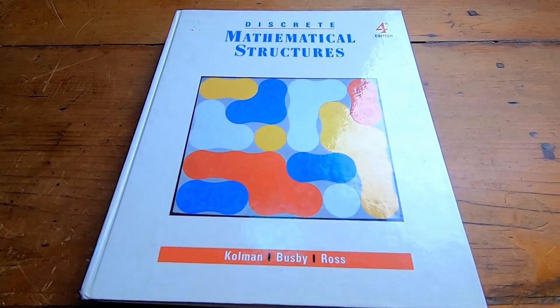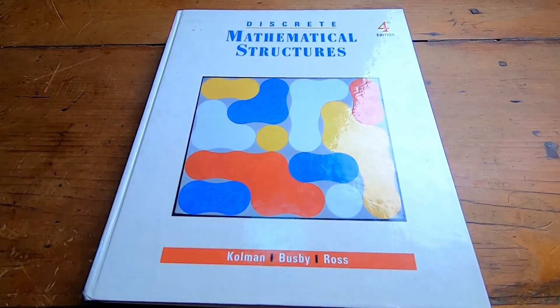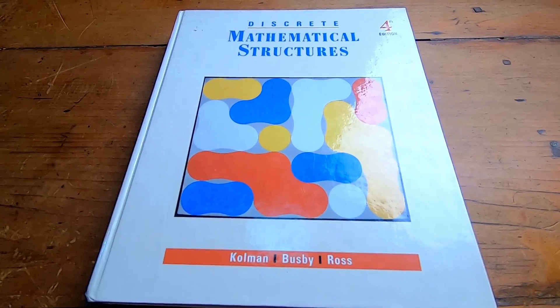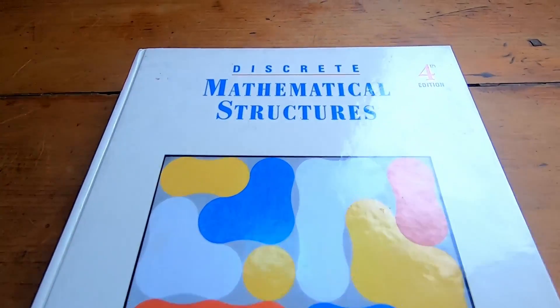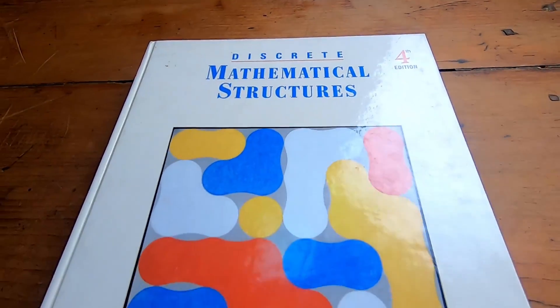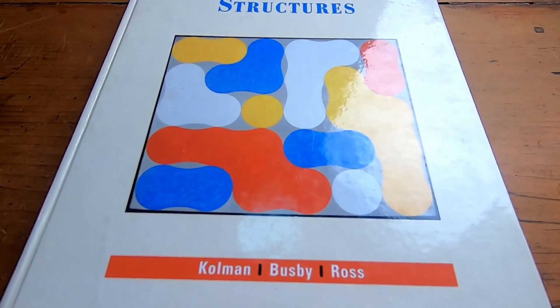Hi everyone. In this video I want to go over a fantastic book on discrete math which is extremely good for beginners. The book is called Discrete Mathematical Structures and it is written by Coleman, Busby, and Ross.